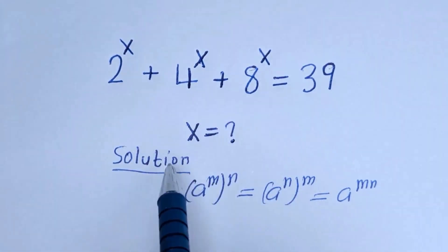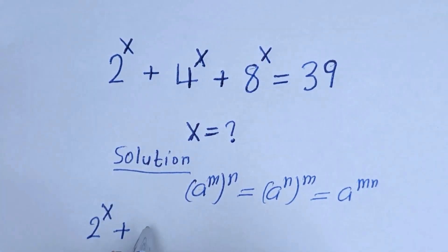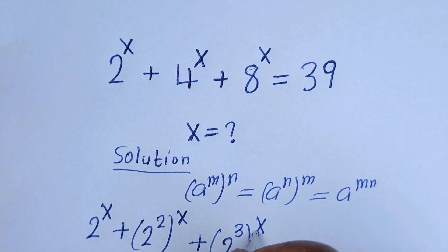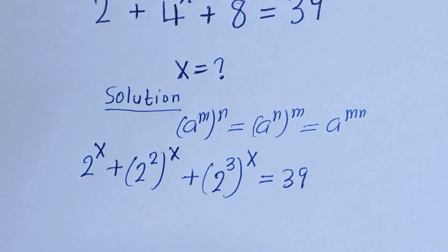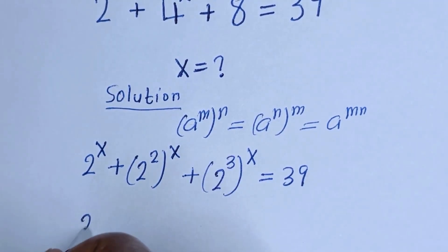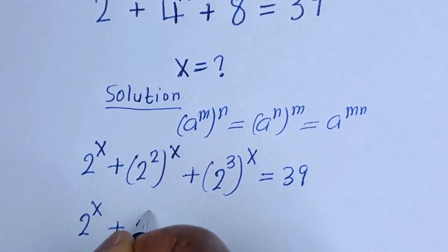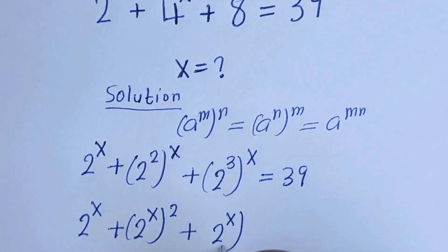The whole equation can be rewritten as: 2 raised to power x, plus 4 raised to power x can be written as 2 squared raised to power x, plus 8 raised to power x can be written as 2 raised to power 3 raised to the power of x. This equals 39. Then from this rule, we have 2 raised to power x, plus 2 raised to power x squared, plus 2 raised to power x raised to power 3, is equal to 39.